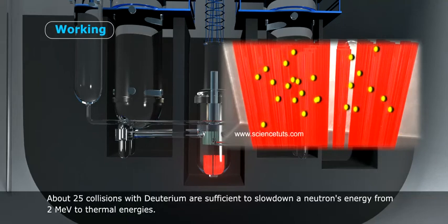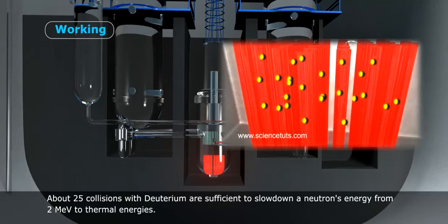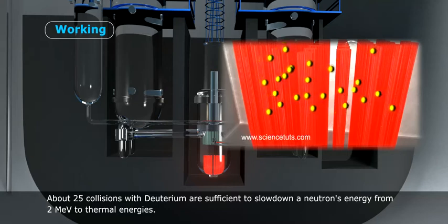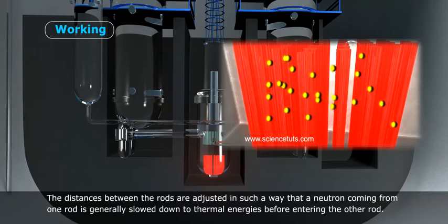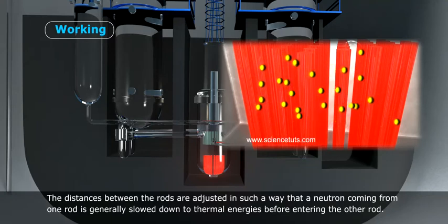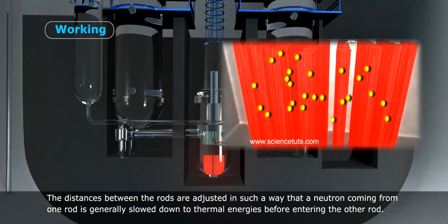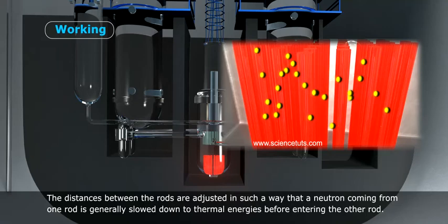The distances between the rods are adjusted in such a way that a neutron coming from one rod is generally slowed down to thermal energies before entering the other rod.